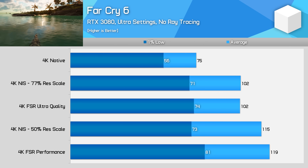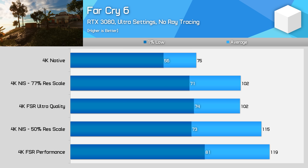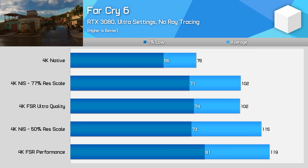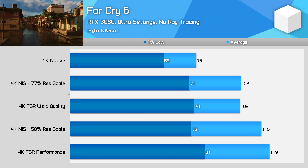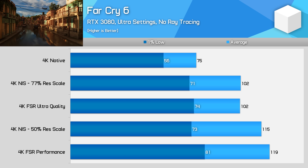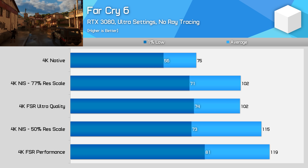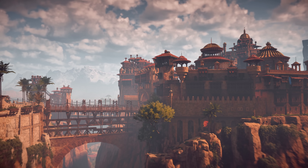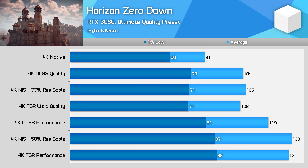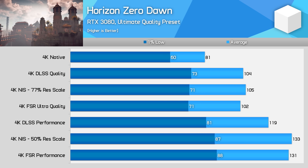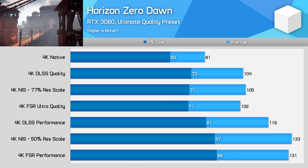In terms of performance, there's not a lot to get excited about as both FSR and NIS deliver roughly the same frame rates when set to the same render resolution. In Far Cry 6 tested at 4K using the ultra preset, FSR delivered slightly higher 1% low numbers, but otherwise both delivered similar performance uplifts using the Ultra Quality preset. FSR took a small lead when using the performance mode, which renders at 1080p. In Horizon Zero Dawn, running NIS is a couple of FPS faster than using FSR, but the overall difference is small and DLSS is providing the best visuals for the level of performance achieved.